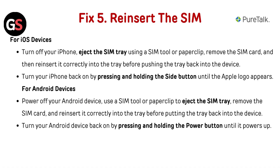Fix 5: reinsert the SIM. For iOS devices, turn off your iPhone, eject the SIM tray using a SIM tool or paperclip. Remove the SIM card and then reinsert it correctly into the tray before pushing the tray back into the device. Turn your iPhone back on by pressing and holding the side button until the Apple logo appears. For Android devices, power off your device, use a SIM tool or paperclip to eject the SIM tray, remove the SIM card and reinsert it correctly, then turn your device back on by pressing and holding the power button until it powers up.